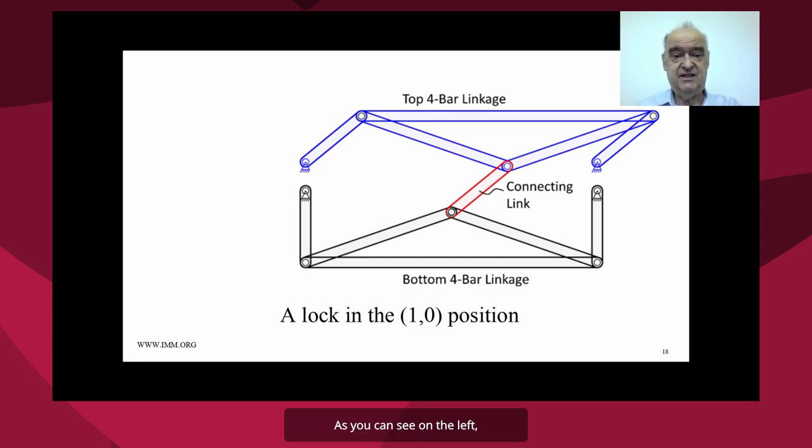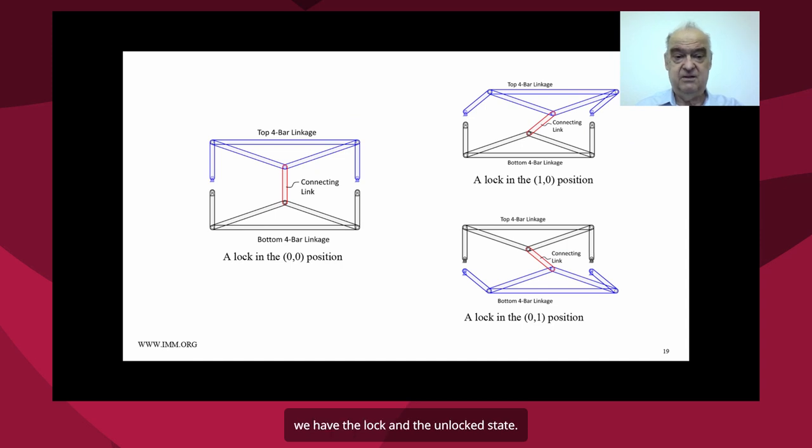As you can see, on the left, we have the lock in the unlocked state. And on the right top, we have the lock, where it's locked the bottom portion, the top portion has moved and locked the bottom part. And on the bottom of it, the bottom part shows the lock in the 0-1 position. It's moved the bottom part of the lock, and it's locked the upper part of the lock.